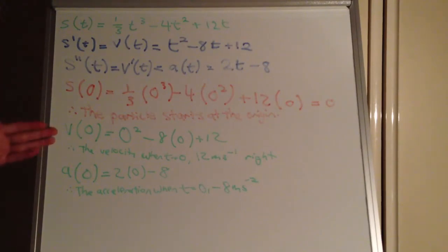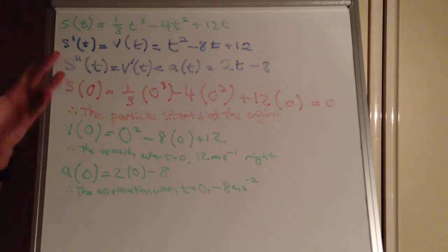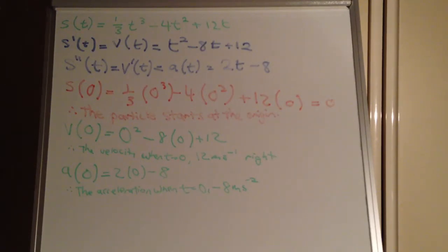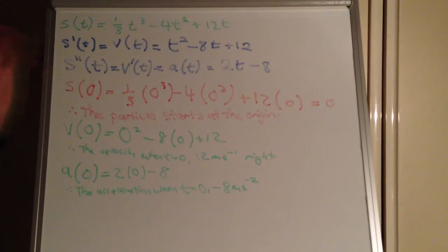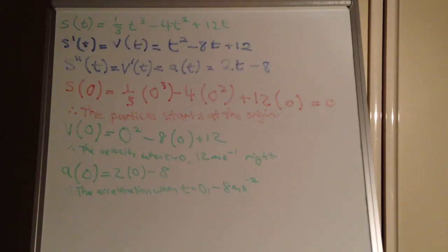So we have s, v, and a at time equals 0. The object is at the origin, moving to the right, but with negative acceleration, so it's going to be slowing down as it moves to the right. We haven't been using difficult maths — just substituting in values and taking derivatives. It's more about getting your head around the concepts. The next question asks us to find at what time the object actually reverses direction.